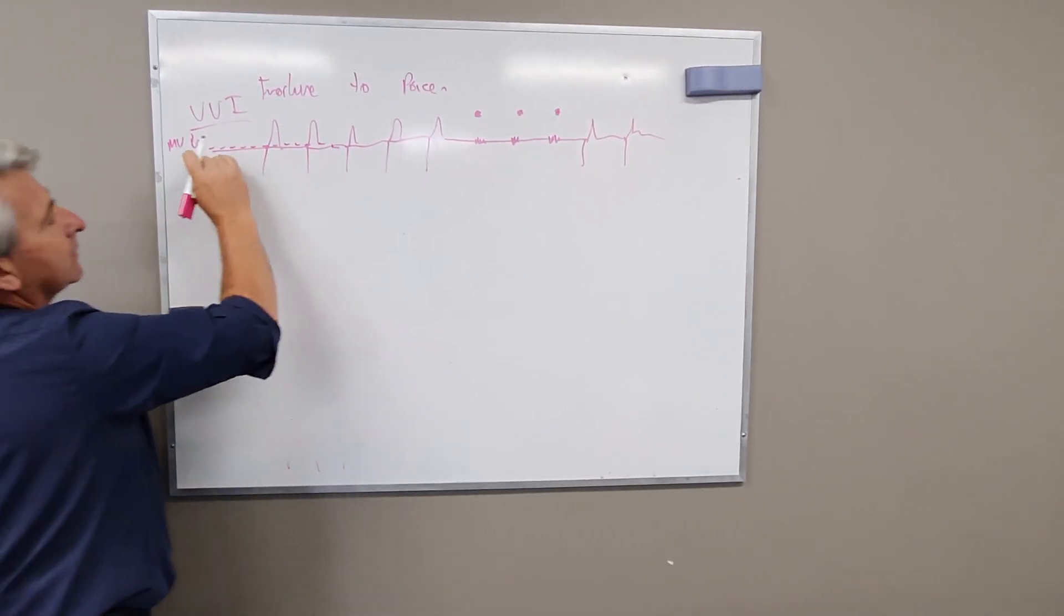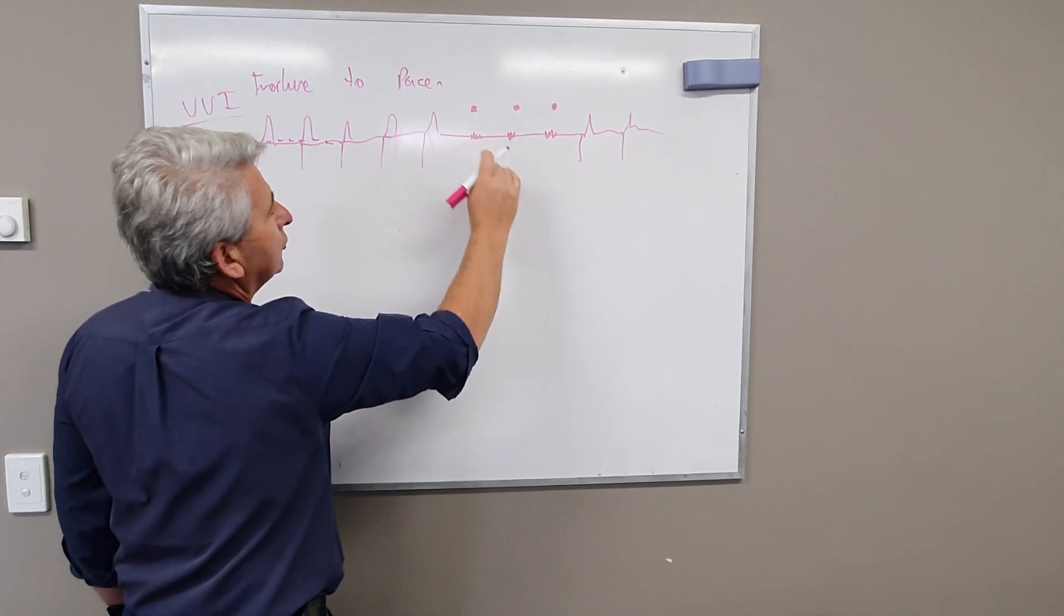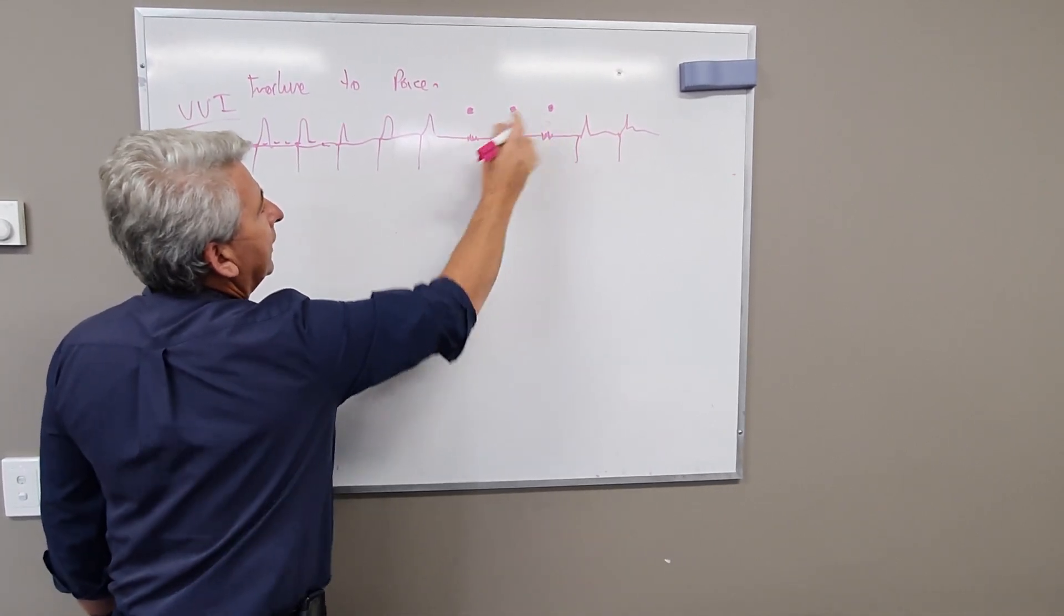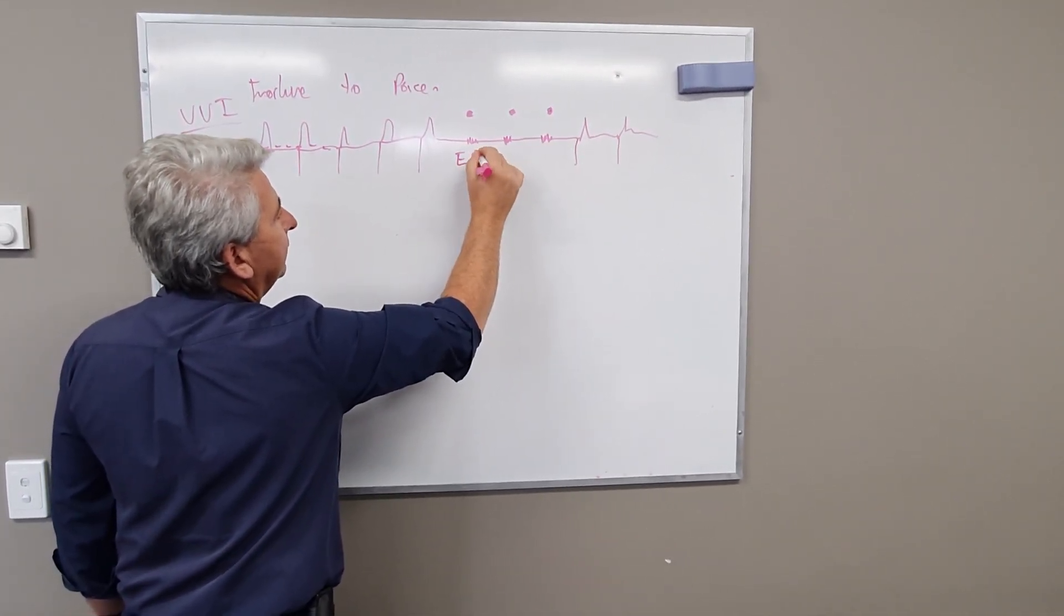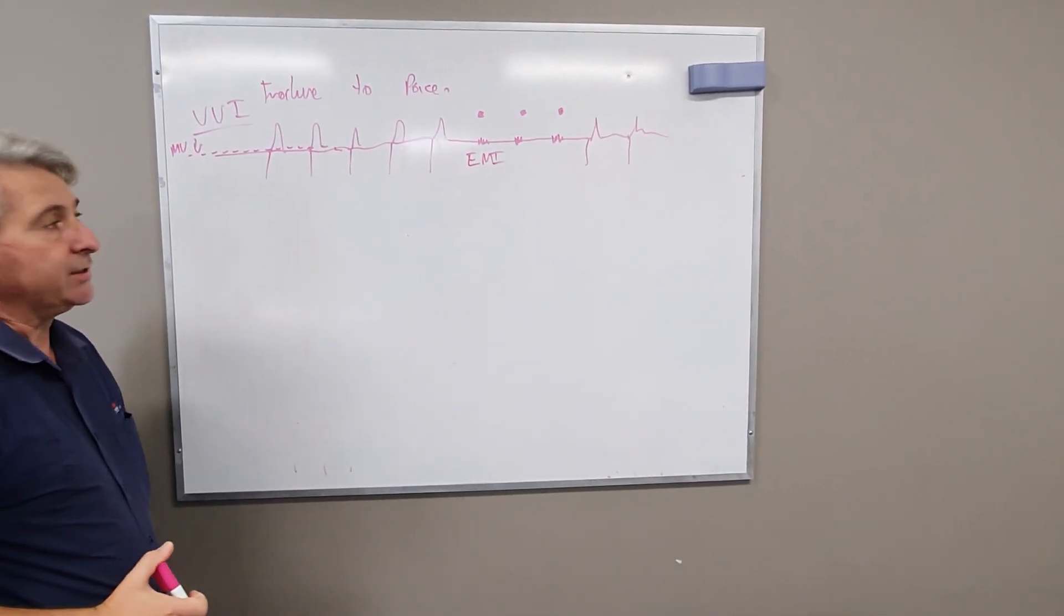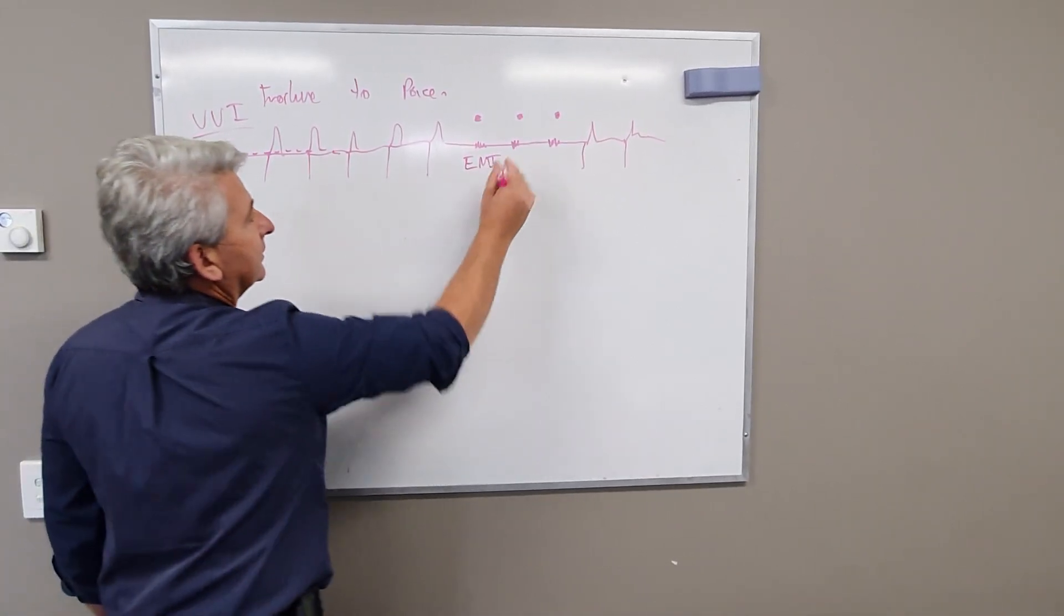So basically what the problem is here is the sensitivity line is way too low, so the millivolts are actually turned right down. So the fence is all the way down, seeing too much, and at this point it thinks this electromagnetic interference is some sort of intrinsic activity. So therefore it doesn't pace.